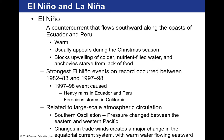El Niño is a counter-current that flows southward along the coast of Ecuador and Peru. These flows are typically associated with warm air, usually appear during the Christmas season, and block the upwelling of colder, nutrient-filled water — causing anchovies to starve from lack of food. The strongest El Niño events on record occurred in 1982–83 and 1997–98. The 1997–98 event caused heavy rains in Ecuador and Peru and ferocious storms in California.